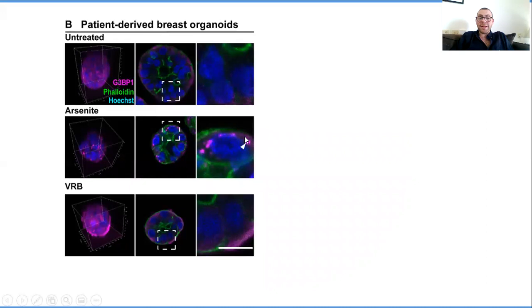When we treated our healthy breast organoids with arsenide, we saw stress granules form nicely in the cytoplasm, but when we treated with VRB at the concentration we were used to using, we saw no stress granules form at all.